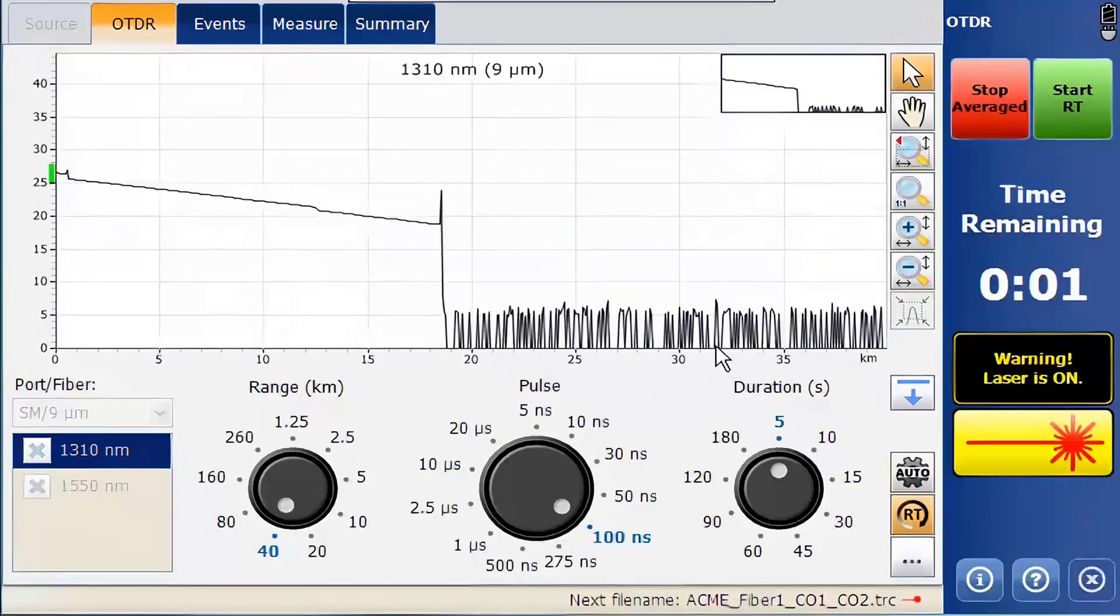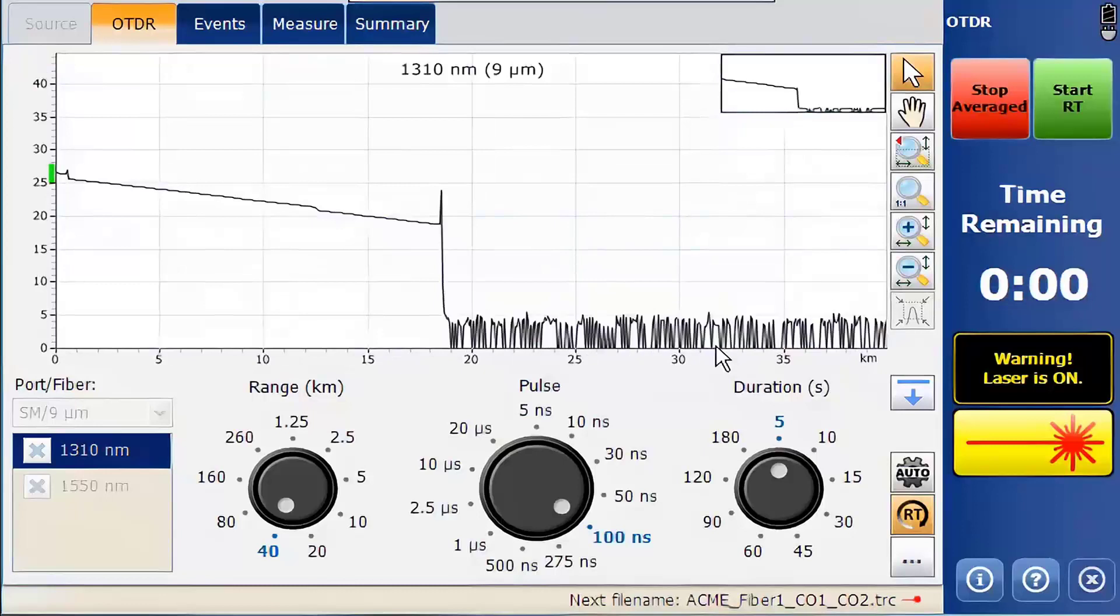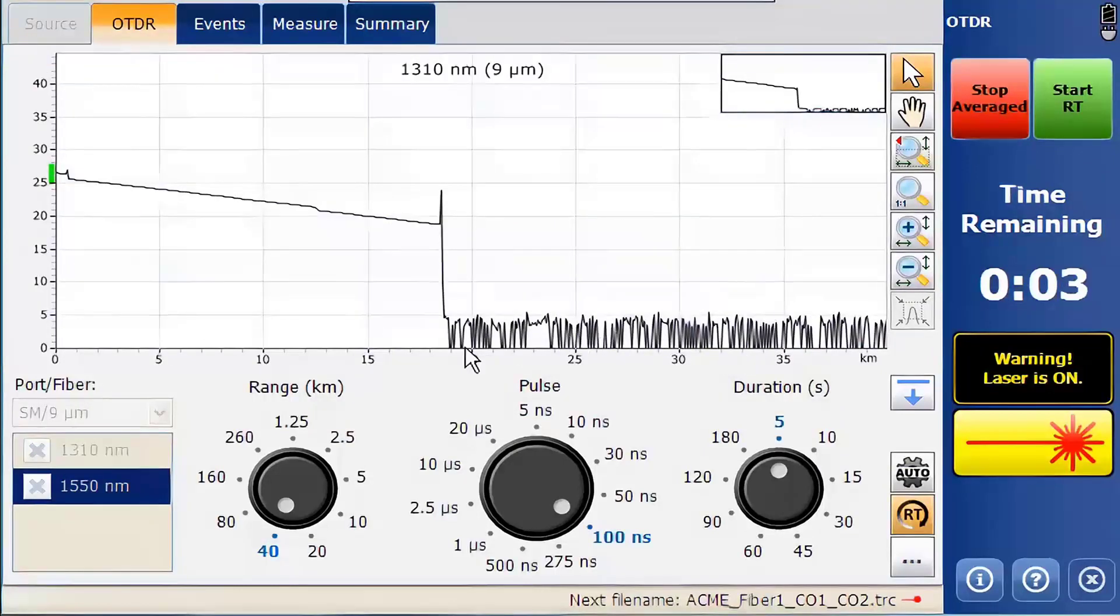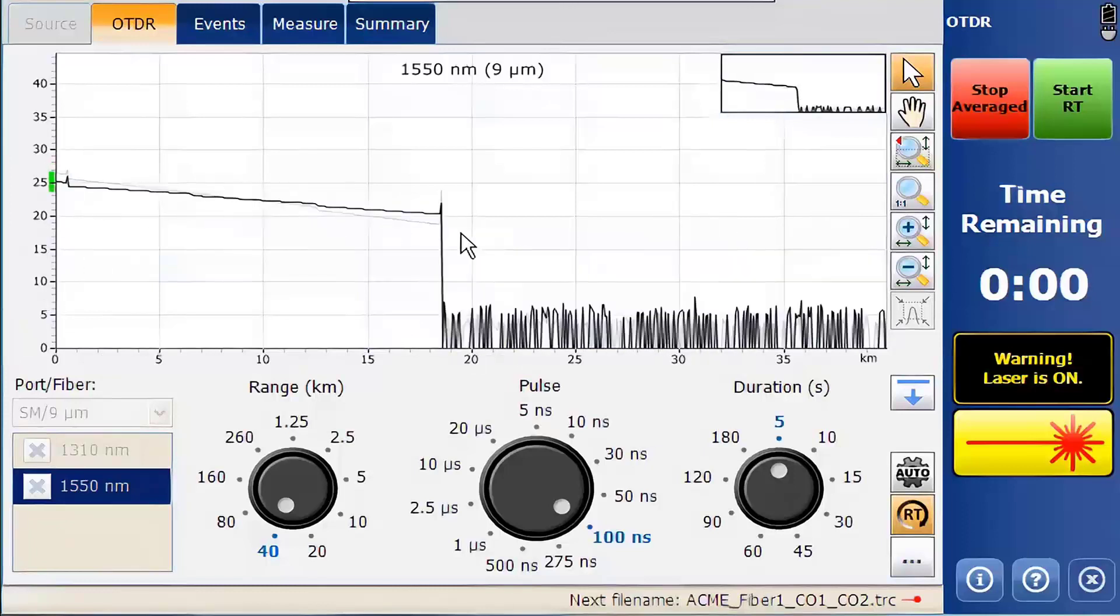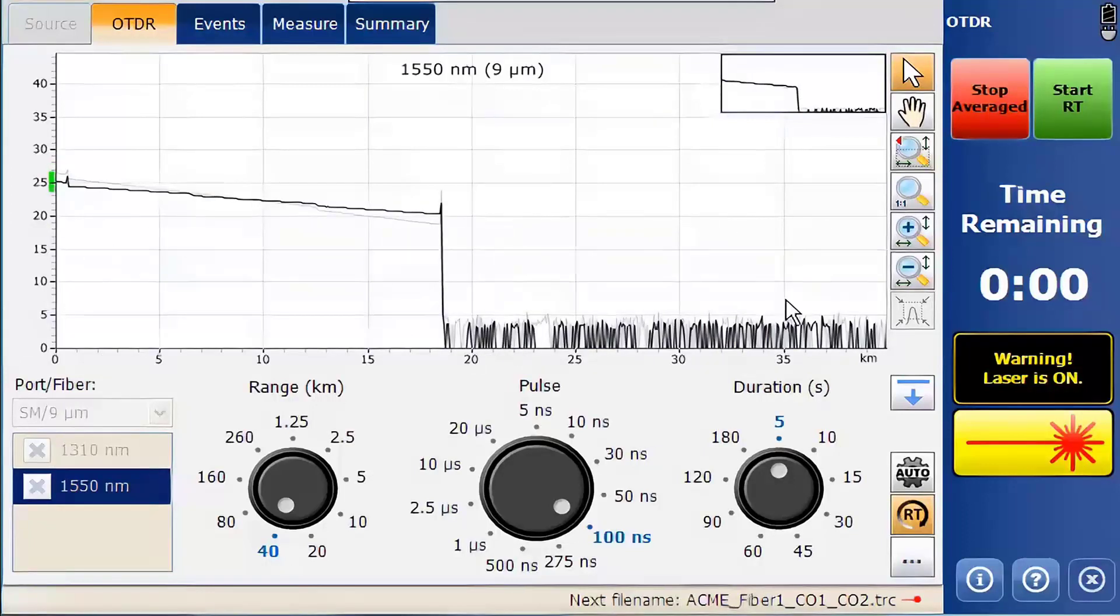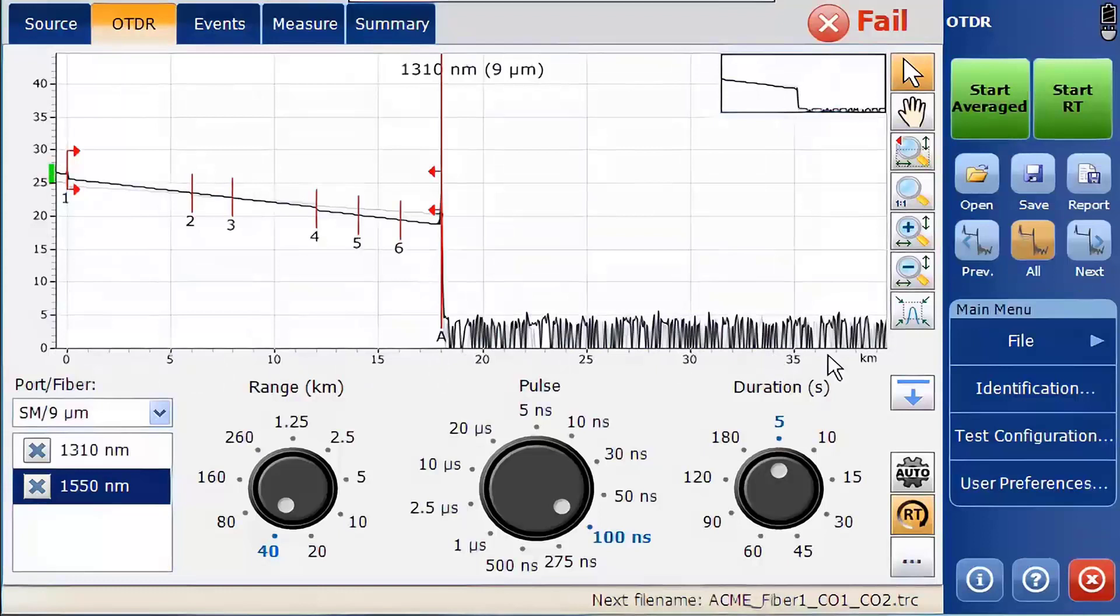The OTDR determines the best settings for a general OTDR test and will set the range, the pulse width, and duration as a starting point. The next best step is to ensure that the range has been adequately adjusted.